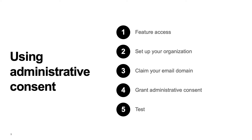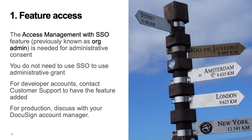There are five steps for using administrative consent: checking availability of the access management feature, setting up your organization, claiming your email domain, granting administrative consent, and testing. Step one is to check that your account has the access management with SSO feature. This feature is included with some DocuSign plans and is optional for others. You do not need to implement SSO. The feature can be requested for developer accounts by contacting customer support. See the show notes for details.